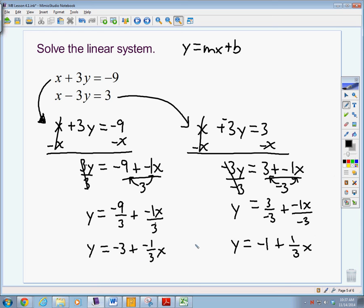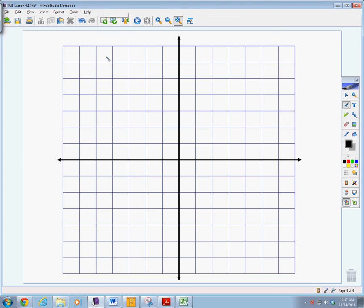So now what we can do is we can graph each of these equations. We did the work up front, but now it should be really easy just to graph them. So looking at our first one here, we have y equals negative 3 plus a negative 1 third x.